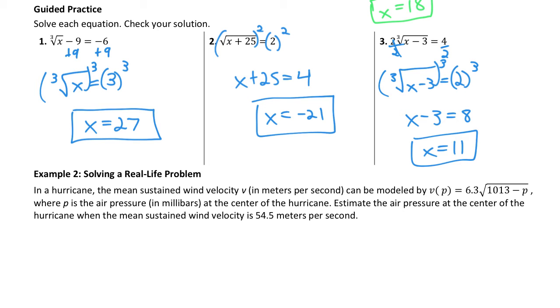Okay, so for these three equations, number one, isolate the radical by adding nine to both sides, then raise both sides to the third power, since this is a cube root. I get 27. Second one, the radical is already isolated, so all I have to do is square both sides right off the bat, and then subtract 25 from both sides to get negative 21.